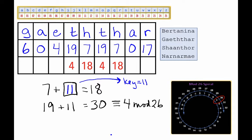By the way, because each time around the wheel is 26 numbers, we can get the same thing by just subtracting 26 from 30.